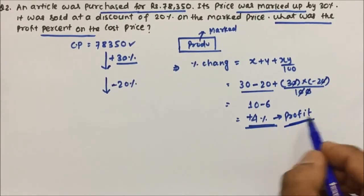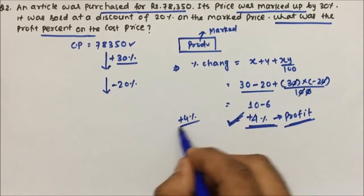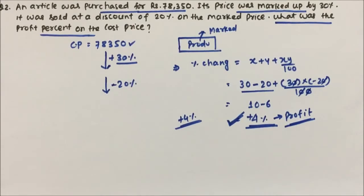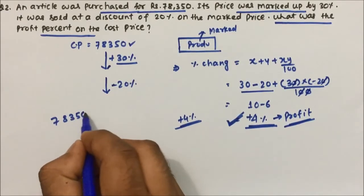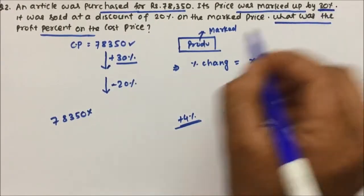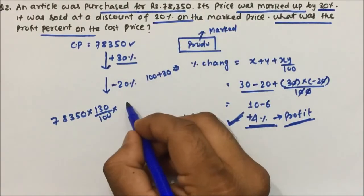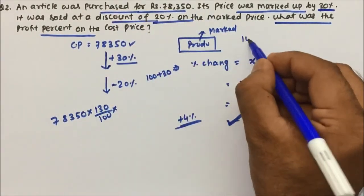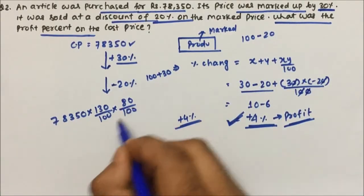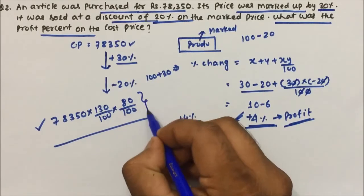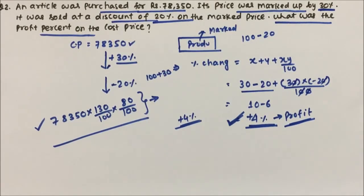So if you are using the percentage change method, then you can solve the questions very fast. But if you are using the normal method, it will take bit more time to solve it. See, for the same question, if you want to use the normal method, then 78,350 into, it was marked by 30%. So 100 plus 30 because it is a profit. So 130 divided by 100 and then again it is selling a discount of 20%. So discount is nothing but kind of loss only. So 100 minus 20% is nothing but 80 by 100. So your simplification is more here. Your calculation is more here. And that will in turn will take more time. And if you will use the percentage change method, then you will get the answer quickly without doing anything. So thanks for watching the video.